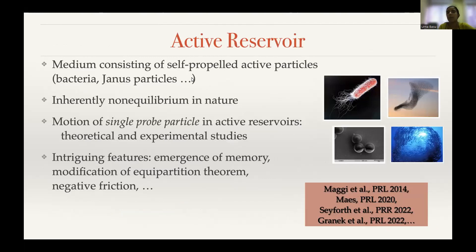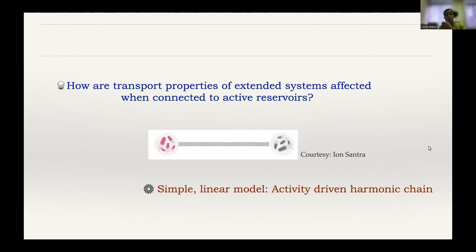In particular, what happens when these reservoirs are active reservoirs? By active reservoirs I mean a medium consisting of self-propelled active particles — like bacteria or Janus particles — which are inherently non-equilibrium in nature. Motion of single probe particles in active reservoirs is being studied very much currently, both theoretically and experimentally, and they show a host of intriguing features like emergence of memory and negative friction. We are asking the next question: what happens when we connect a system between two such active reservoirs and how does the transport property change?